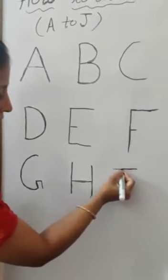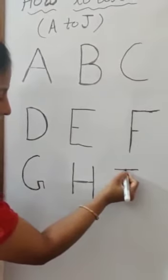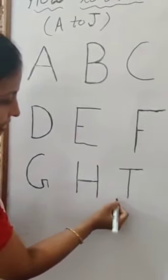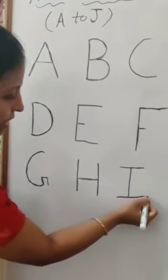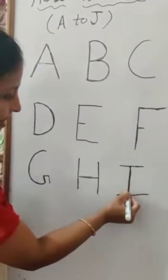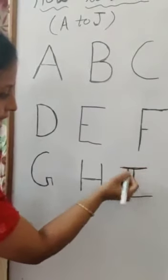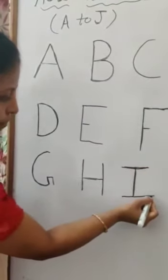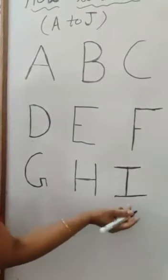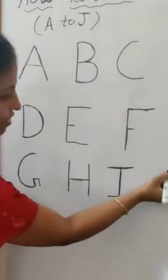I: slipping line at the top, then standing line, and at the bottom one more slipping line — one more slipping line at the bottom makes I.